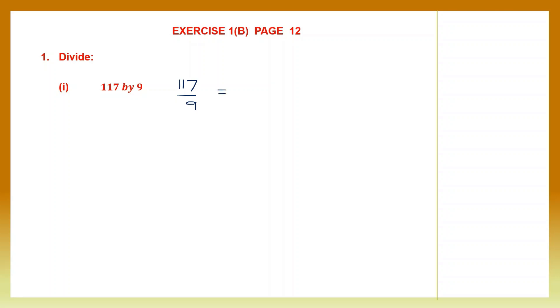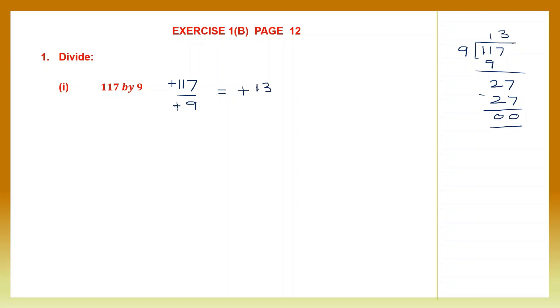Now we're going to begin our division sums. Let's divide 117 by 9. 117 is the dividend, 9 is the divisor. Since both are positive — when there's no sign it's understood to be positive — our answer will also be positive. Dividing 117 by 9: 9 ones are 9, 11 minus 9 is 2, bring down 7 to get 27, and 9 threes are 27. So the answer is plus 13.